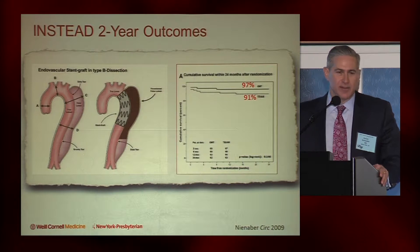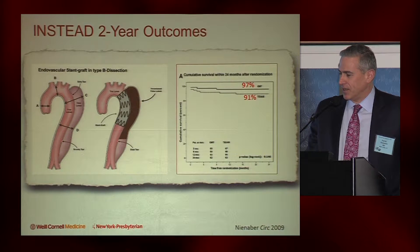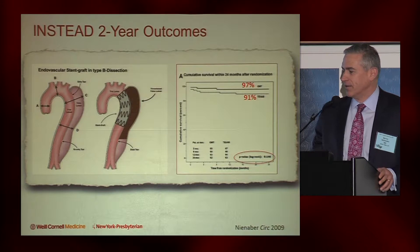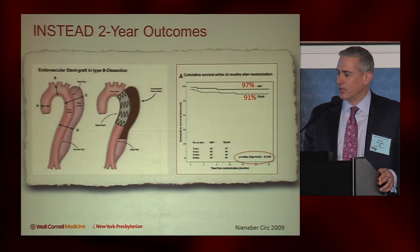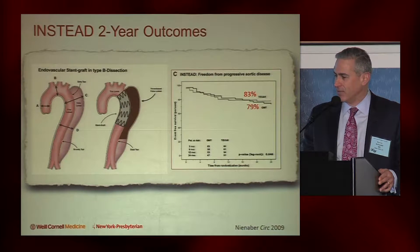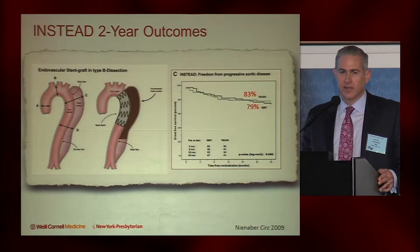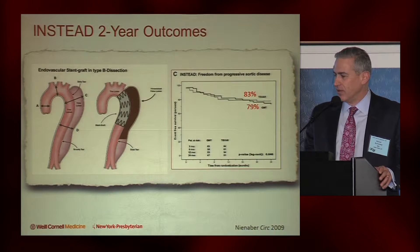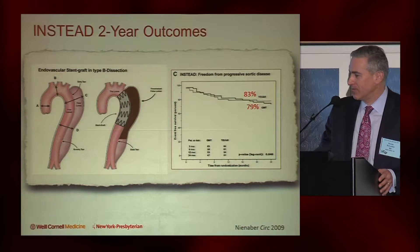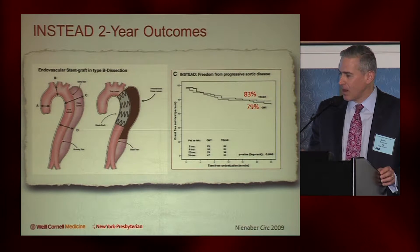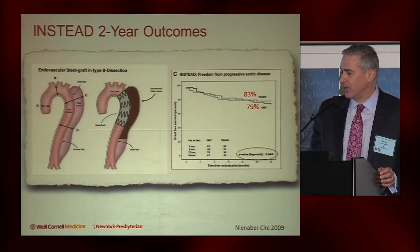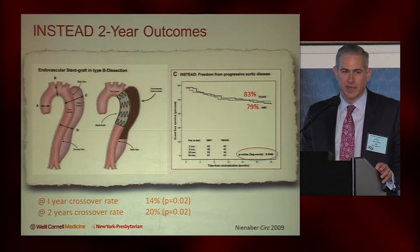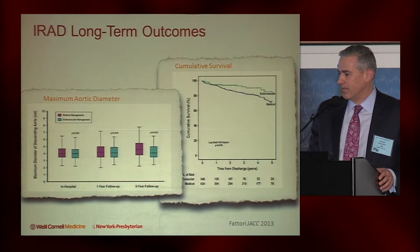The disappointing result for TVAR enthusiasts: at the primary endpoint at two years, there was no difference in cumulative survival. In fact, it looked slightly worse in the TVAR group — 91% versus 97%. Freedom from progression of aortic disease was also similar at two years: 79% in optimal medical therapy versus 83% in TVAR — not statistically significant. It is important to note that a large number of patients crossed over, and this was an intention-to-treat analysis.